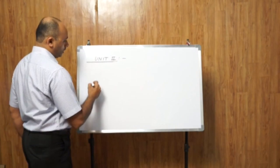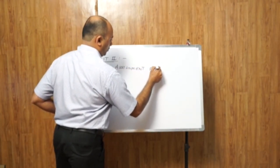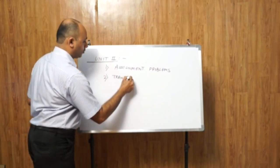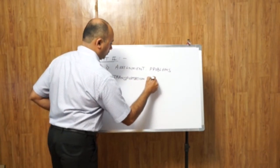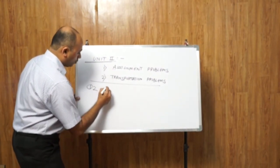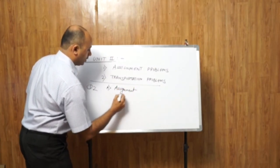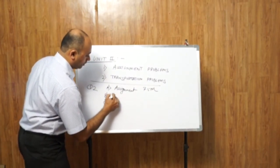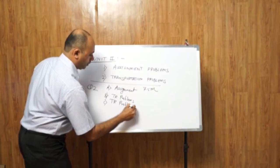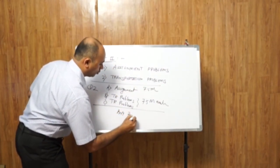Unit 2 has two topics. The first topic is Assignment Problems and the second is Transportation Problems. In question 2, sub-question A will be on Assignment Problems worth 7.5 marks, and sub-questions B and C will be based on Transportation Problems, 7.5 marks each. Out of A, B and C we have to solve any two problems.